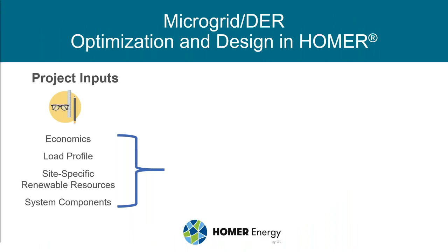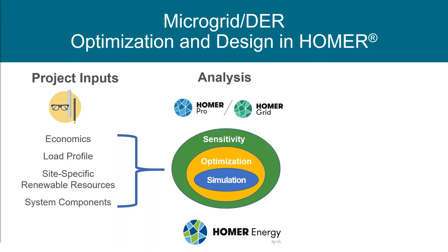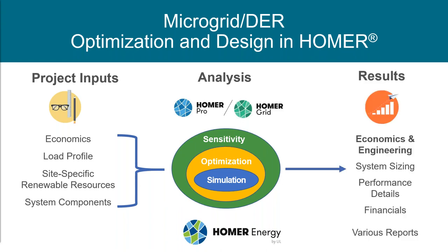Using HOMER to design and optimize your microgrid has three main steps. First, you provide information on the economics such as interest rate, along with your energy demand and profiles, your location — which tells us the renewable resources available like solar radiation and wind speed — as well as the types of equipment to consider. HOMER then steps through simulation, optimization, and sensitivity analysis, and provides detailed results on economics and system operation down to every hour or minute.